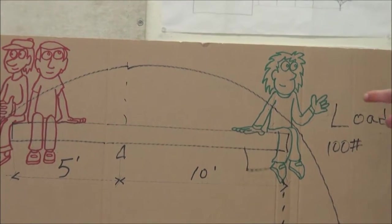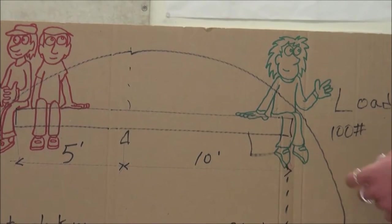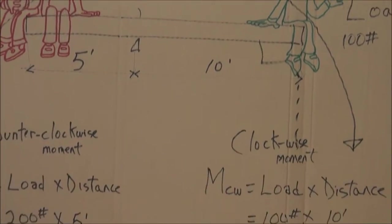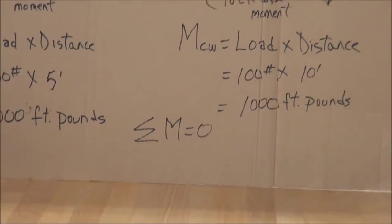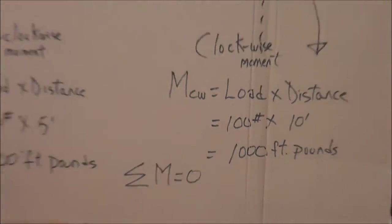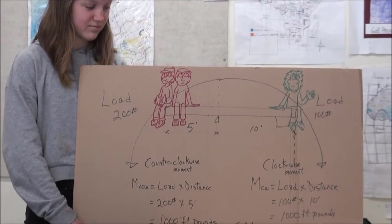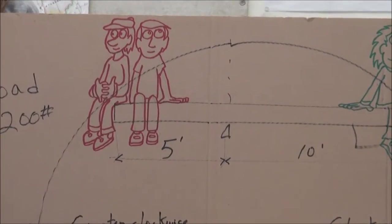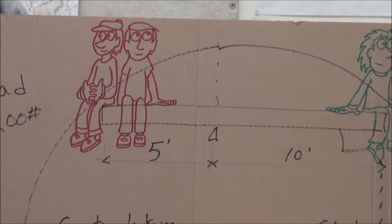This kid also weighs 100 pounds, but he's 10 feet away. So 100 pounds times 10 feet equals 1,000 foot pounds. And 200 pounds times 5 feet also equals 1,000 foot pounds. So the weight is the same on both sides. Perfect.